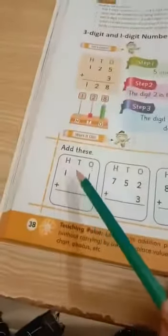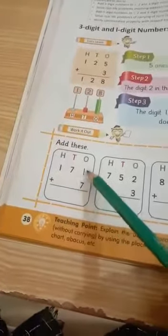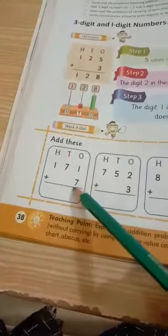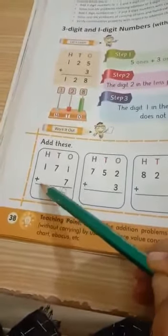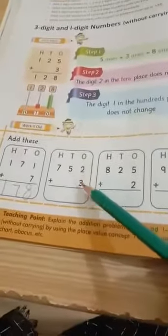Ab ye exercise solve kar lietate hai. 1, 71. 1 plus 7, 8. 7 ki jaga niche kuch nahi hai, to 7. And this is 1. 1, 78. 2 plus 3, 5. 5. 10s ki place mein kitne hai? 5. 7 ki place mein? 7. 7, 55.